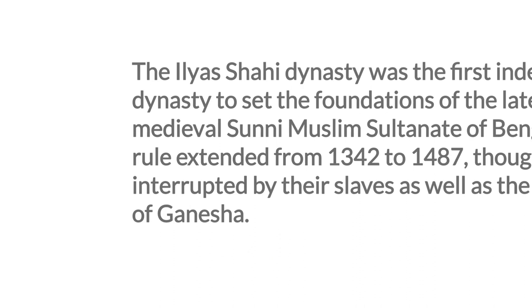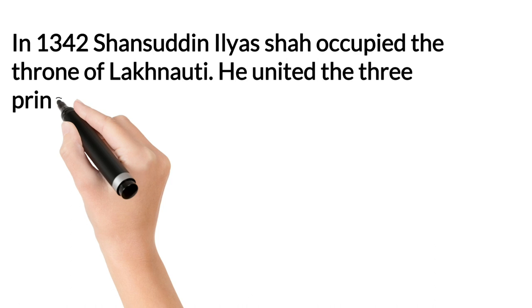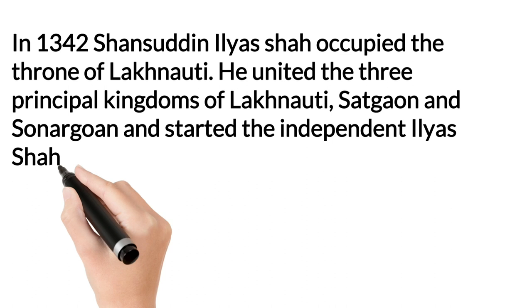In 1342, Shamsuddin Ilyas Shah occupied the throne of Lakhnauti. He united the three principal kingdoms of Lakhnauti, Sadgao, and Sonar Gong, and started the independent Ilyas Shahi rule in Bengal. He also included East Bengal and Kamroop within his territory.